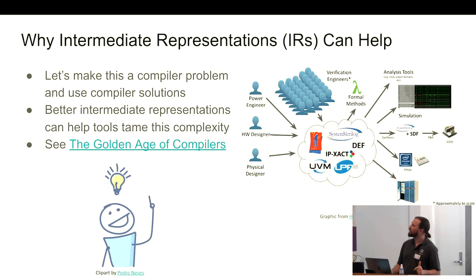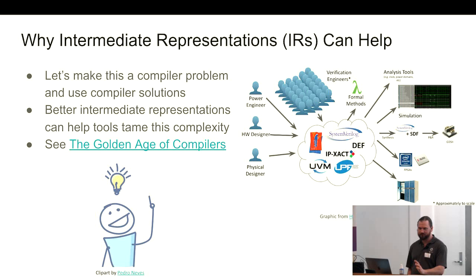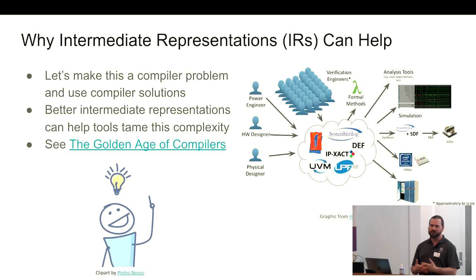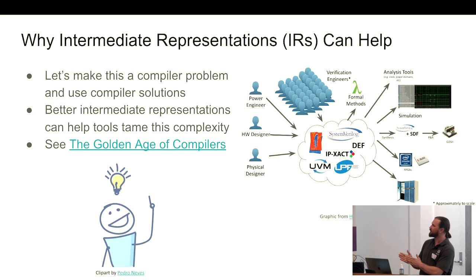One way to look at this is kind of as a compiler problem. I'm talking about compiler infrastructure for hardware today. It's important to think about one thing from compilers, which is intermediate representations — IRs. This is how compilers represent information, how they capture design intent. We saw just in the last talk how Hammer has the Hammer IRs to capture information through their flows. That's the idea we're trying to take with Circuit: you can use compiler solutions for problems like this.